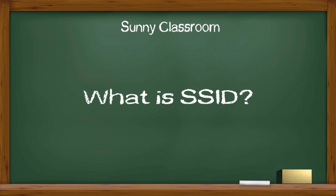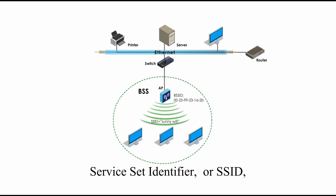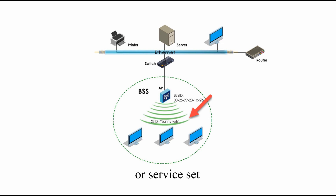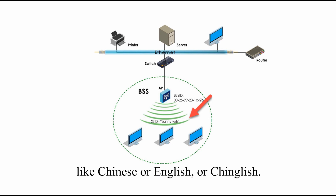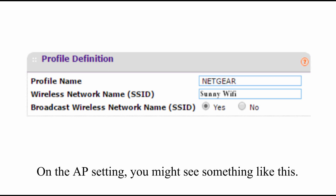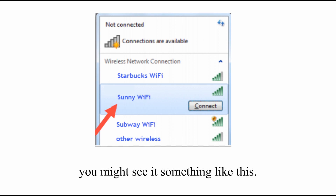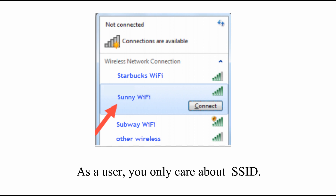Service Set Identifier, or SSID, sometimes called network name, is a unique character string used to identify an AP or service set. You can name it in any natural language, like Chinese, or English, or Chinglish. On the AP setting, you might see something like this, but on the wireless device, like your computer, you might see it something like this. As a user, you only care about SSID — you select one from the list on your wireless device and use the network.